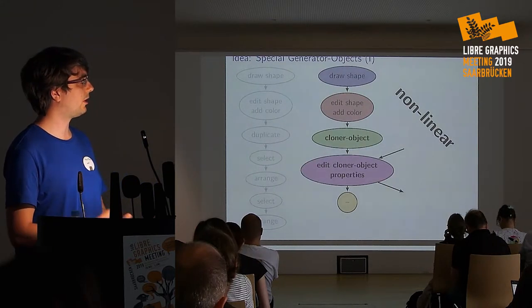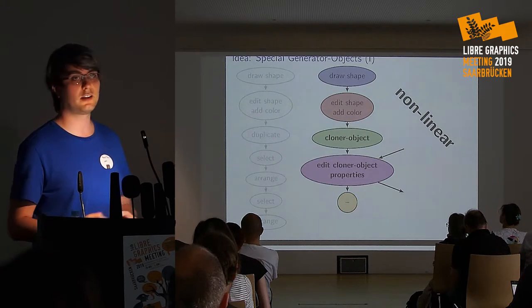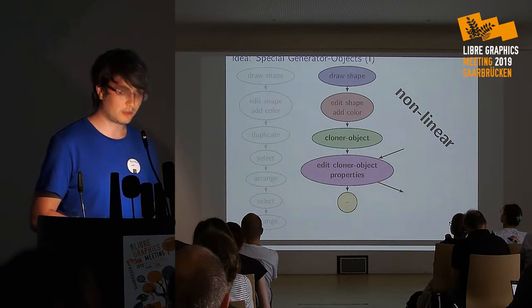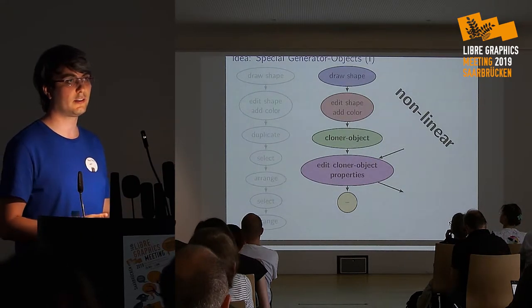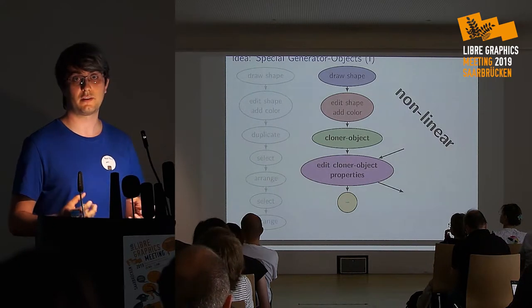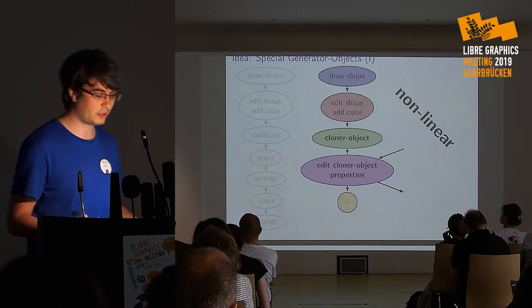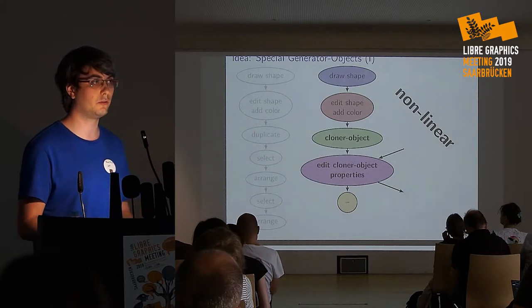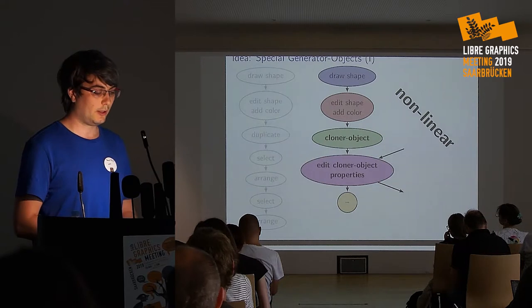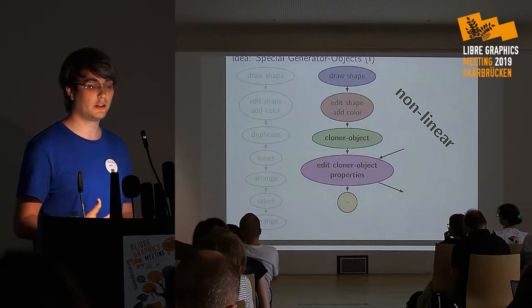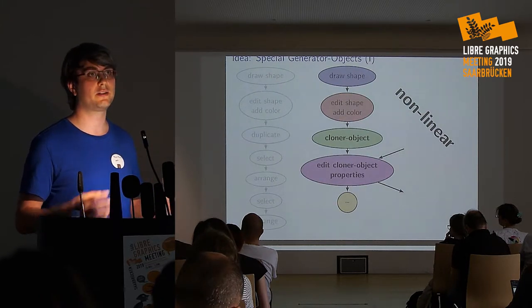So, what can we do better? I propose that we don't use a cloning tool, a duplicate, or an arrange-and-pattern tool as we have in Inkscape, but instead a cloner object. The way it works is that you can interact with it in a very non-linear fashion. You draw the shape, edit the shape and color as before, but then you don't duplicate it — instead you create a cloner object and put the shape you just drew into it. The cloner takes full responsibility for all the clones. No matter how many clones you have, you just have two objects.